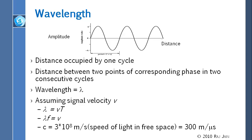For wireless signals we talk about frequencies — for example, a 2.4 GHz signal. For light, we talk about wavelength — for example, 750 nanometers. But 750 nanometers can be translated into a few terahertz by knowing the speed. The speed of light is 300 meters per microsecond — make sure you remember that.